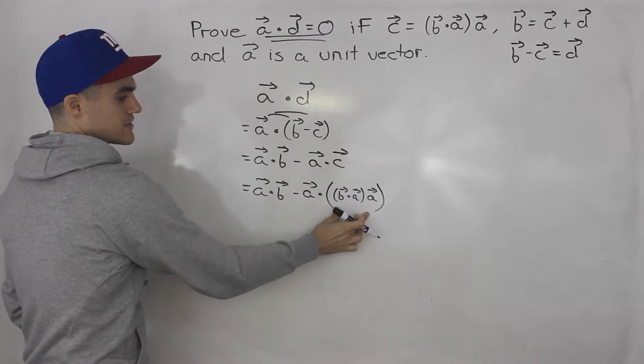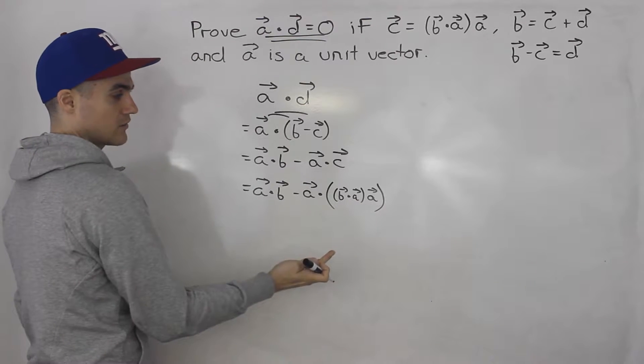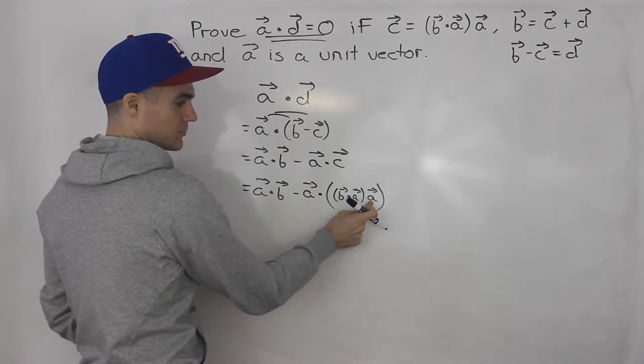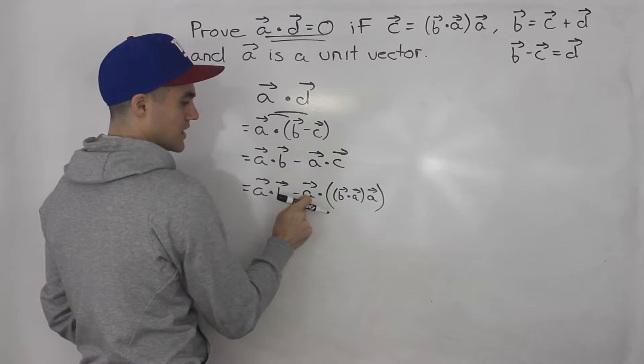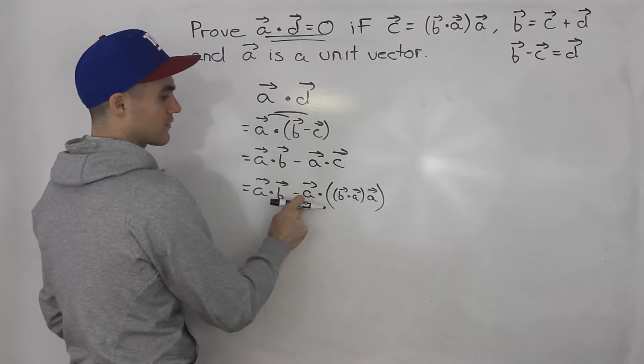So I want to talk about this here. And notice that the dot product between two vectors, that's just a scalar. So we basically have a scalar, some kind of number, multiplied by vector a, and then we're taking the dot product of that vector in brackets with vector a again.